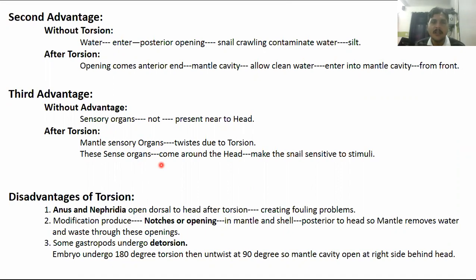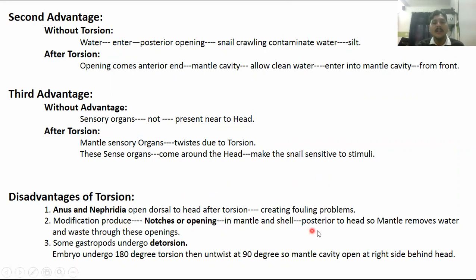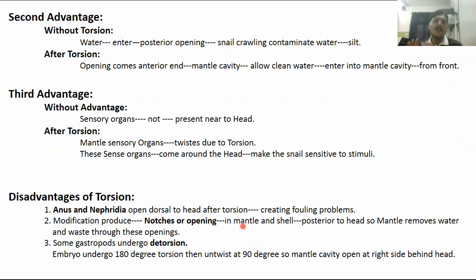Now the disadvantages of torsion. One disadvantage is that after torsion the anus and nephridia open dorsal to the head, creating fouling problems. When the head is close to the excretory opening, waste material and foul smell are produced near the head. Another modification produced notches or openings in the mantle and shell posterior to the head, through which the mantle removes water and waste, which was also a problematic factor.